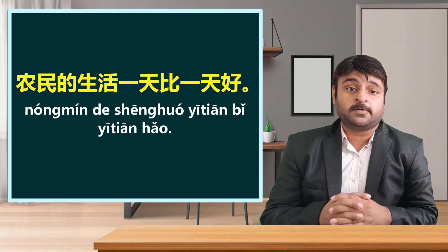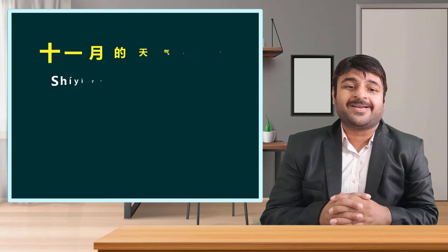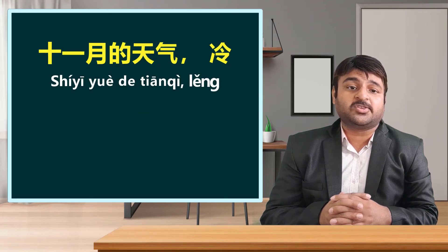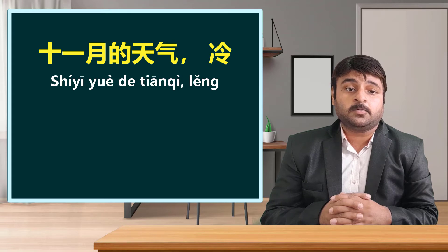Moving on to the words in the box to make replacement. Weather in November — 十一月的天气 — is growing cold, day by day. Using the pattern 一天比一天 — day by day — the weather in November is getting colder progressively.